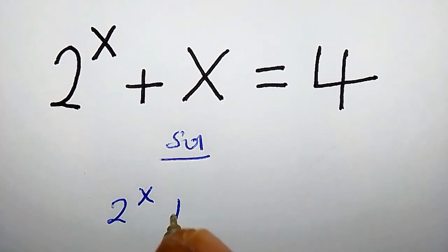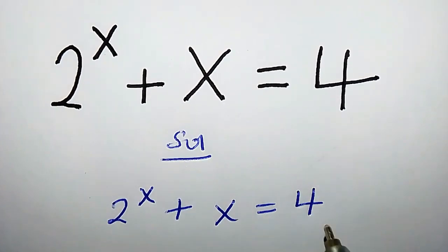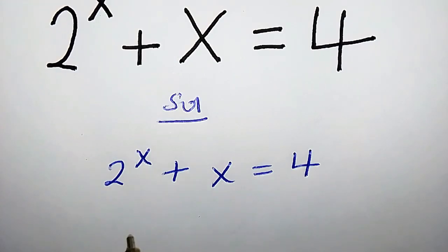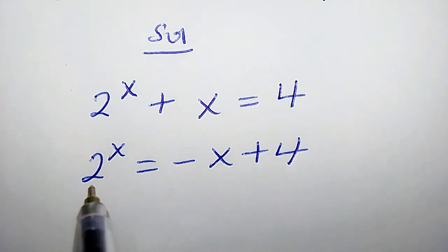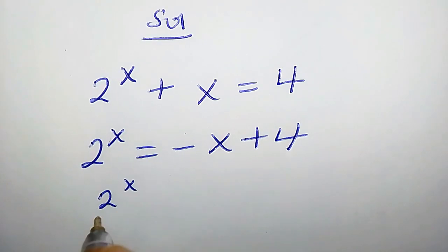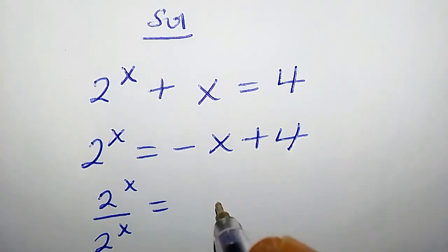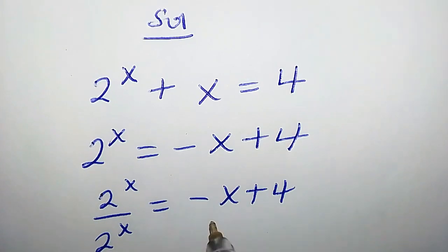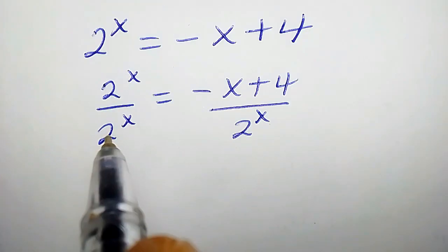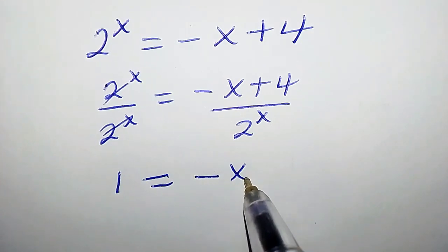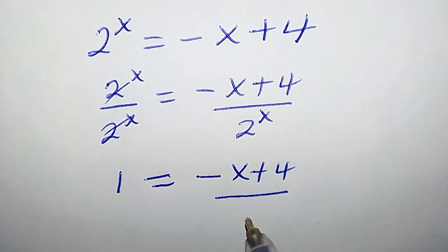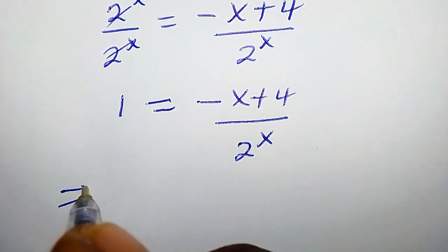2 to the power of x plus x equals 4. Let's transfer x to the right side, so we're going to have 2 to the power of x equals negative x plus 4. Now let's divide both sides by 2 to the power of x. So we're going to have 2 to the power of x over 2 to the power of x equals negative x plus 4 over 2 to the power of x. Clearly, these cancel each other, so we have 1 equals negative x plus 4 over 2 to the power of x.